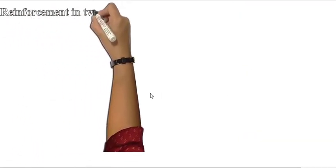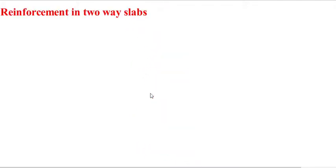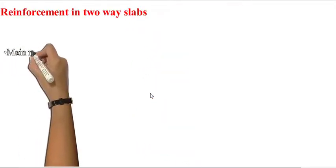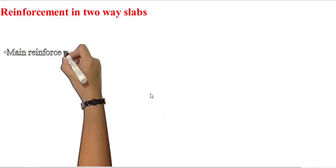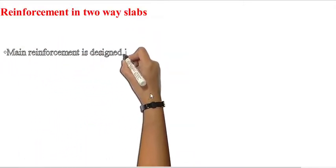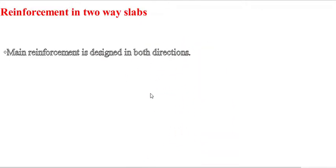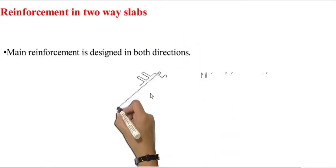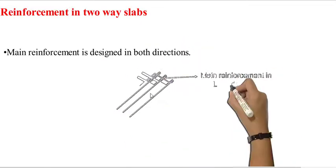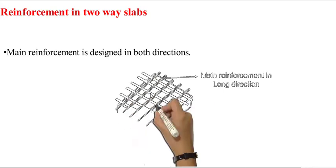Reinforcement in two-way slabs: because deflection is in two directions, main reinforcement is designed in both directions, which means in both the shorter and the longer direction.